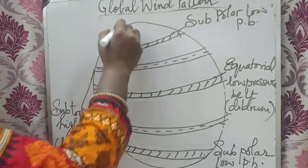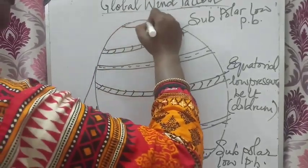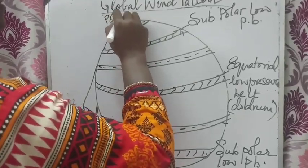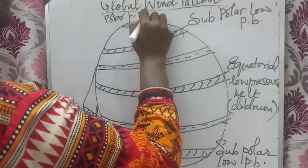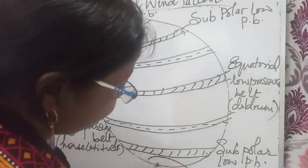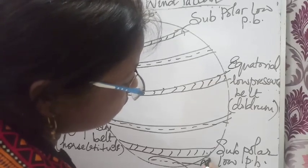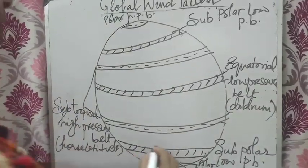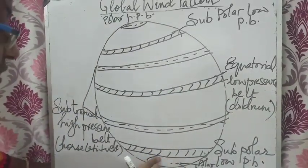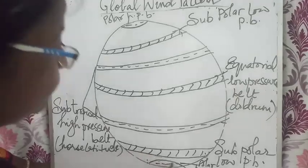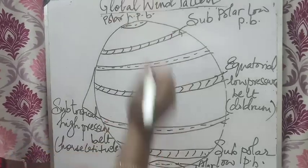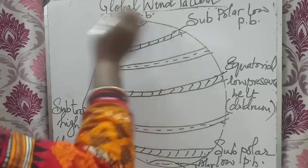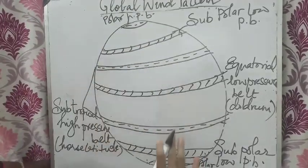When we move to the extreme northern pole, here again a high pressure belt is generated, which is named the polar high pressure belt. The same applies in the southern hemisphere. So now you can see all together seven pressure belts are generated: high pressure belt, low pressure belt, high pressure belt, low pressure belt, high pressure belt, low pressure belt, and high pressure belt — alternating throughout.